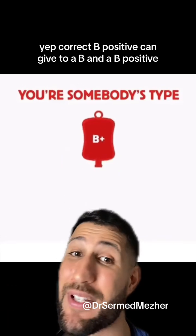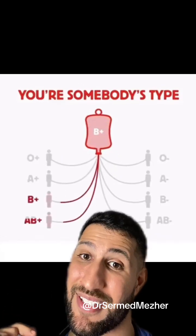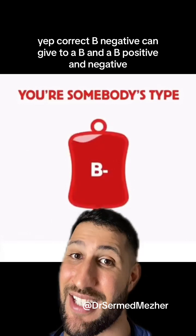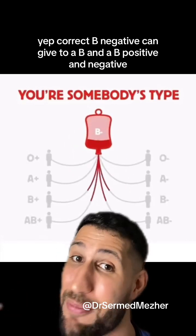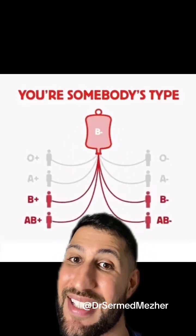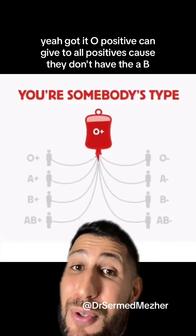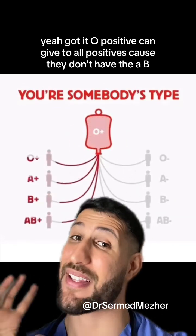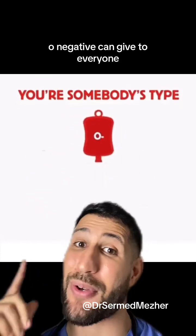B positive can give to AB and B positive. B negative can give to AB and B positive and negative. O positive can give to all positives because they don't have the AB antigens but have the Rh antigens.